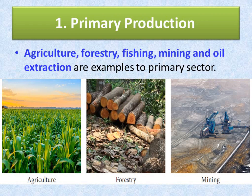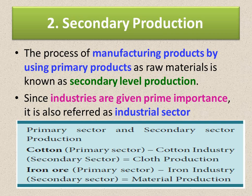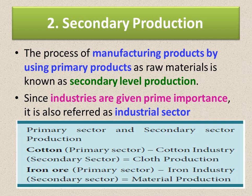Secondary production is the manufacturing and assembling process. It involves converting raw materials into components — for example, making plastics from oil — and assembling the product, such as building houses, bridges, roads, etc. The process of manufacturing products by using primary products as raw material is known as secondary level production. Since industries are given prime importance, it is referred to as the industrial sector. For example, cotton production is primary; cloth production is secondary. Mining of iron ore is primary; converting iron ore into steel is secondary production.